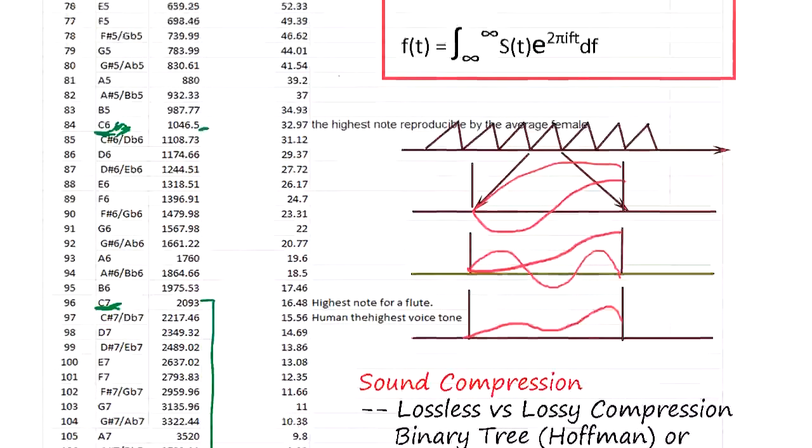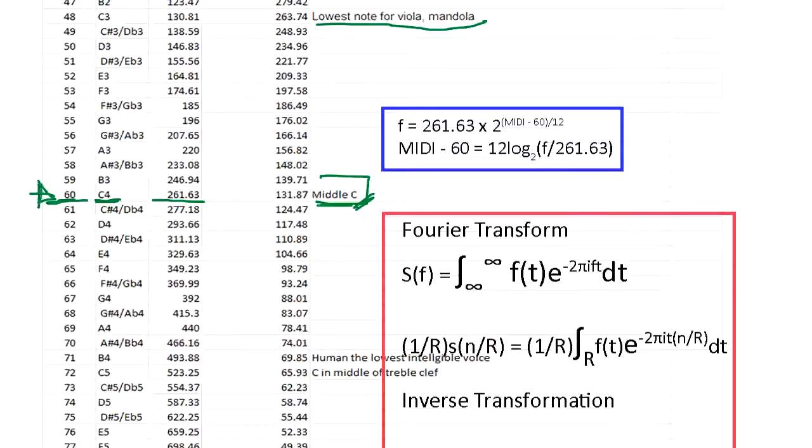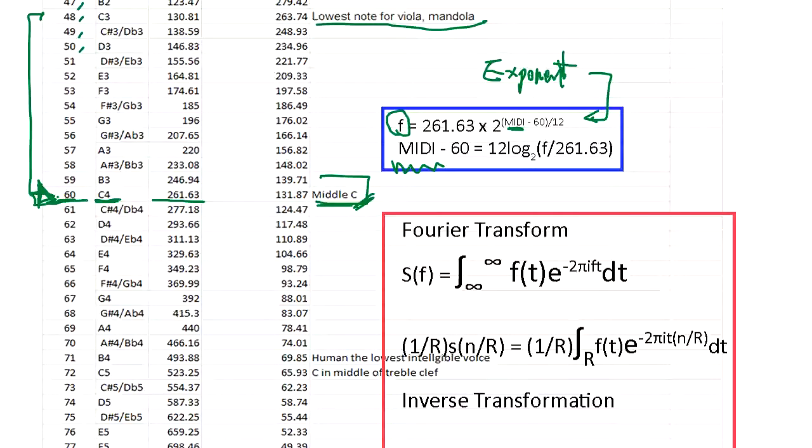The middle note C is MIDI number 60. And using this number, I composed the formula to calculate the frequency from the MIDI number. That's an exponential function. That means MIDI number, which is a linear number 47, 48, 46, between C to C, it's evenly allocated.